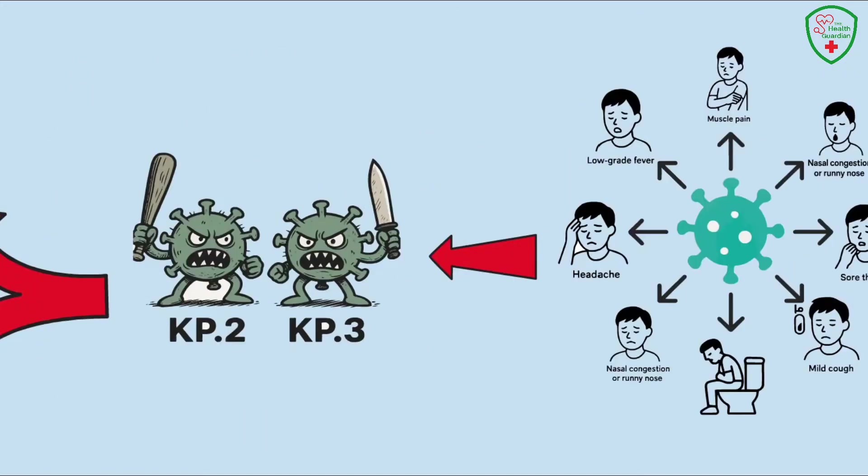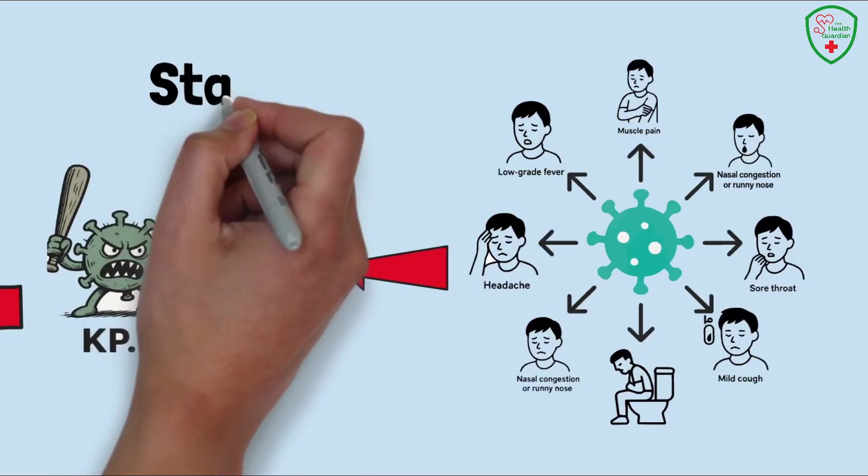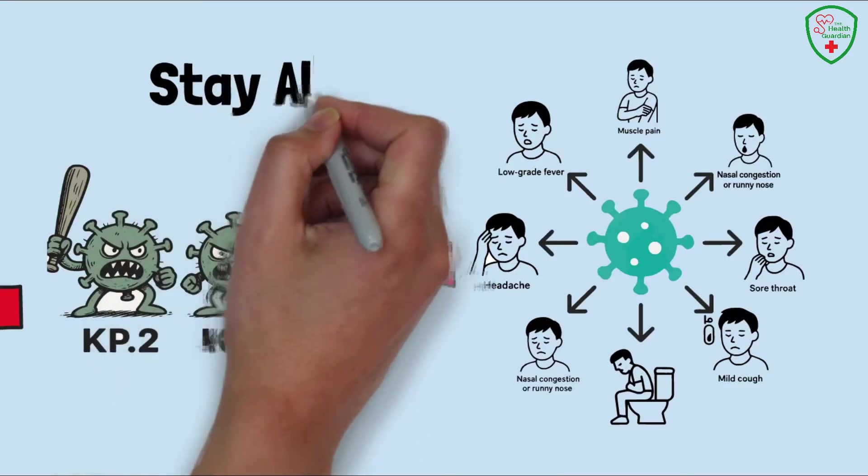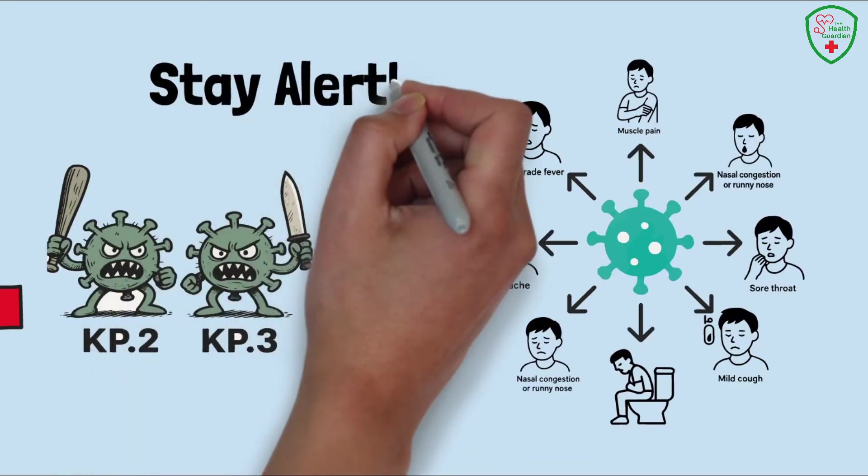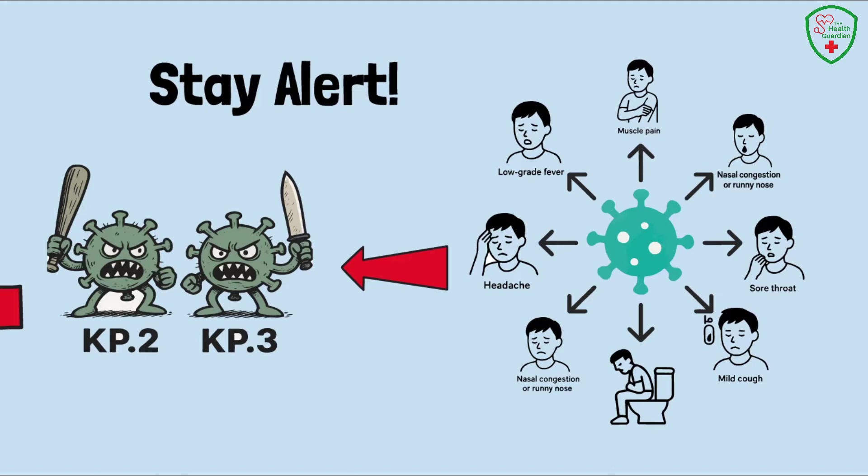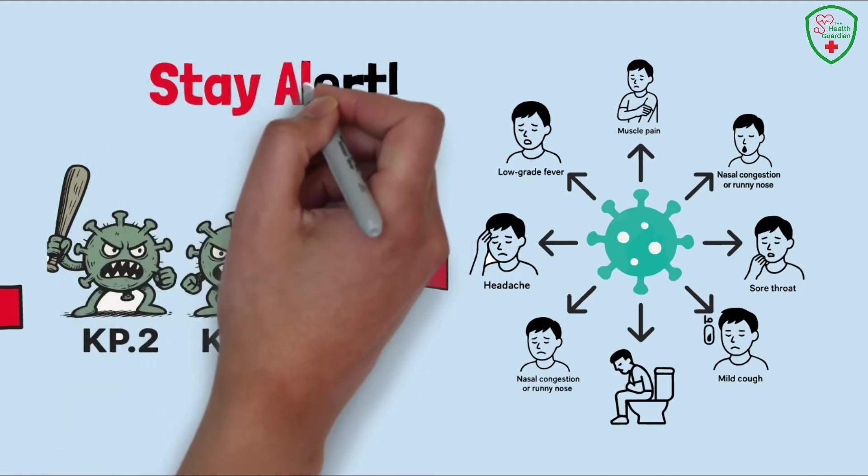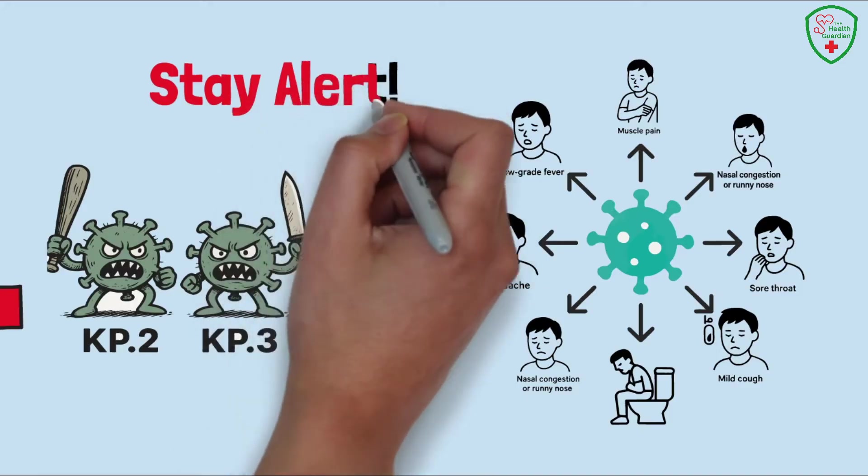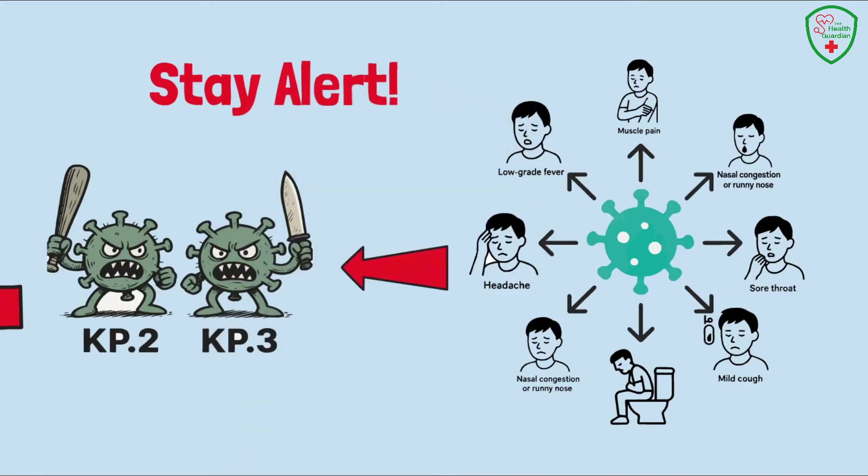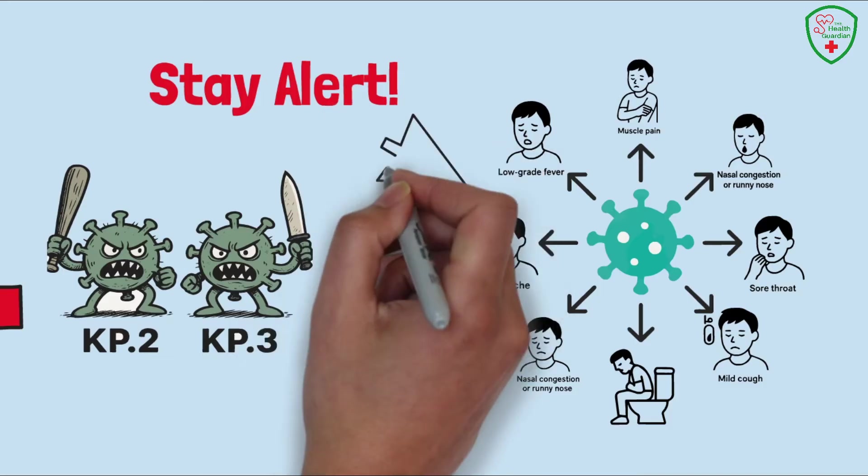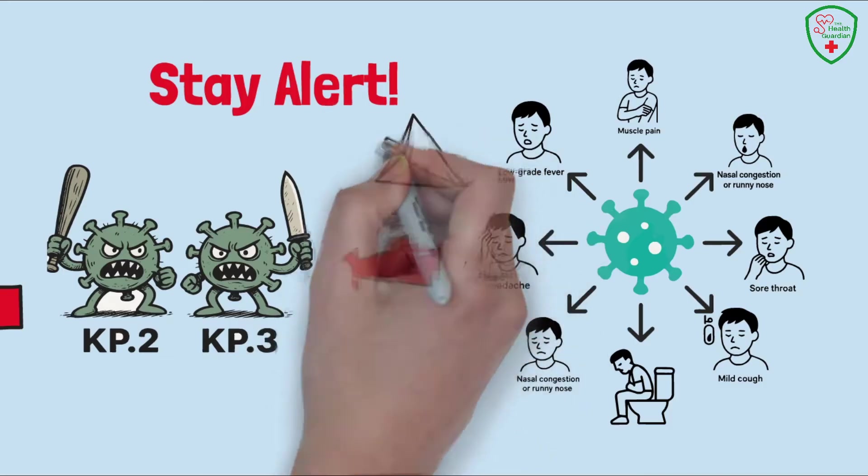These symptoms are like the virus's calling card. They're often the first sign something's wrong, whether it's the FLIRT variants or an older strain. But don't get too comfortable just because they're familiar. They can range from mild, like a slight fever you barely notice, to severe, where you're struggling to catch your breath. If you feel any of these, it's like a red flag waving in your face. Time to take action.